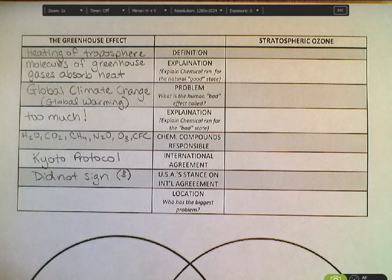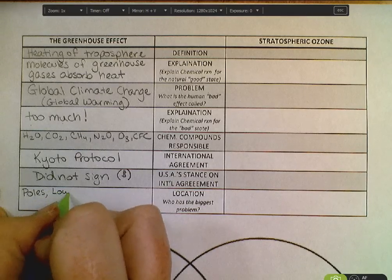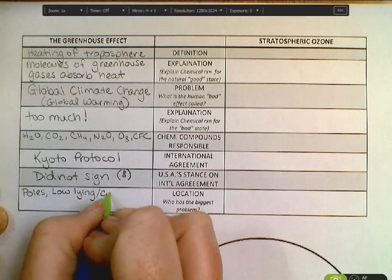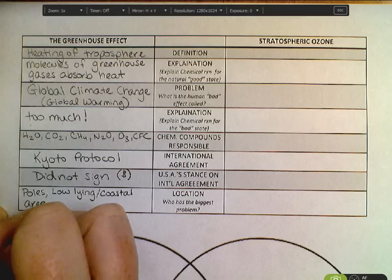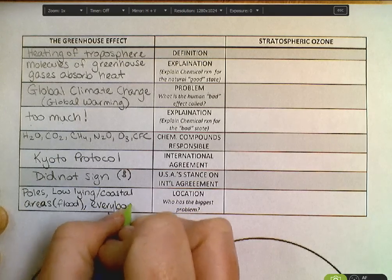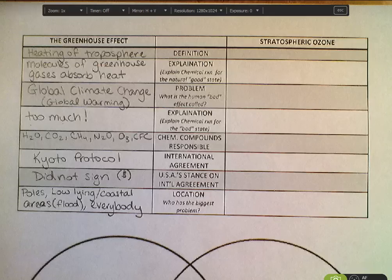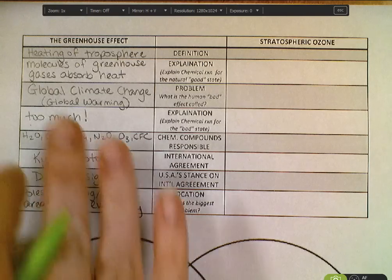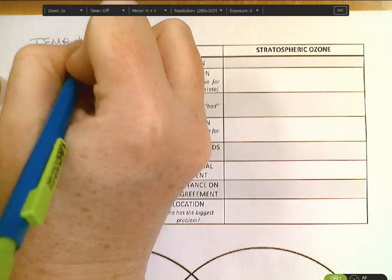Location — who is going to have the biggest problem? We are seeing incredible action at the poles in terms of the rate of change. We also know that low-lying coastal areas are more likely to flood, but eventually everybody is going to feel massive impacts. Places like Australia with massive wildfires, places like Georgia with droughts we have not seen to this extent before. The biggest problems are going to come first at the poles and in low-lying coastal areas. That's the greenhouse effect — it has to do with temperature and the troposphere.